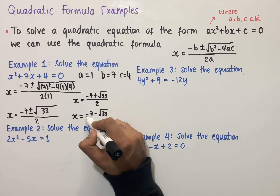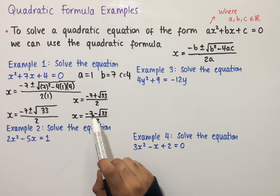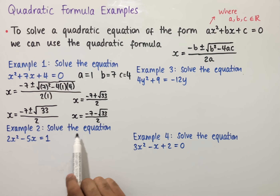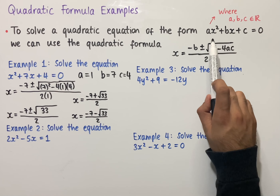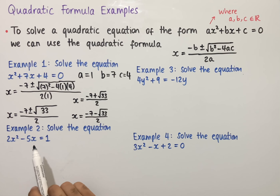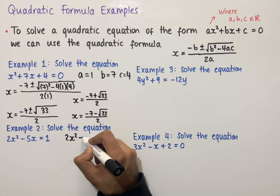In this case, this quadratic has two solutions. So x equals minus 7 plus the square root of 33, all over 2, and x equals minus 7 minus the square root of 33, all over 2. These are the exact solutions; we can substitute these into a calculator to work out decimal values as well.